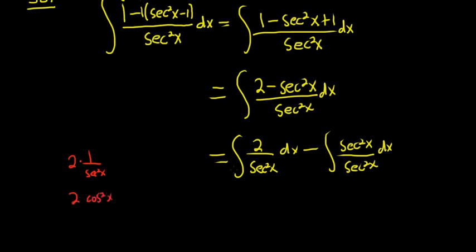right, 2 cosine squared because 1 over secant is equal to cosine. So this is equal to 2 cosine squared x dx minus and then simply dx.